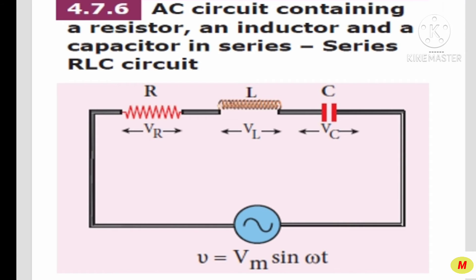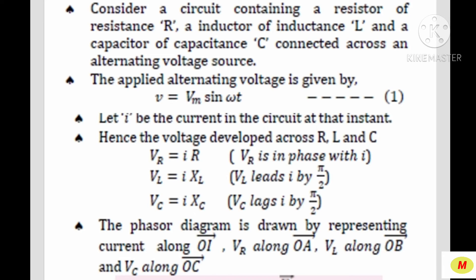Next is about an AC circuit containing an inductor and a capacitor in series — or series RLC circuit. The resistor R, inductor L, and capacitor C are connected in series with the alternating voltage source. The applied alternating voltage is V = Vm sin ωt — equation number 1. Let i represent the current flowing in the circuit. The voltage across R is VR = iR, which is in phase with the current. VL = i·XL, and VL leads the current i by π/2 (90 degrees). VC = i·XC, and VC lags the current i by π/2 (90 degrees).